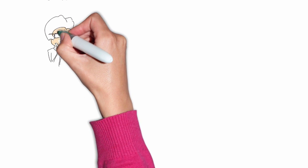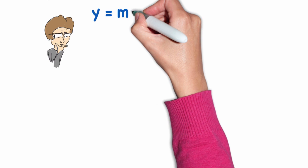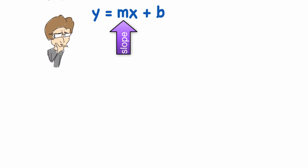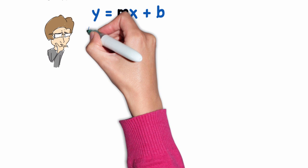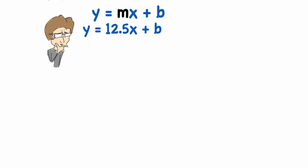Remember, the equation of a line can be represented in the form of y is equal to the slope times x plus the y-intercept, where m is the slope and b is the y-intercept. So I can substitute the slope we have of 12.5 in the equation. y is equal to 12.5 times x plus the y-intercept.